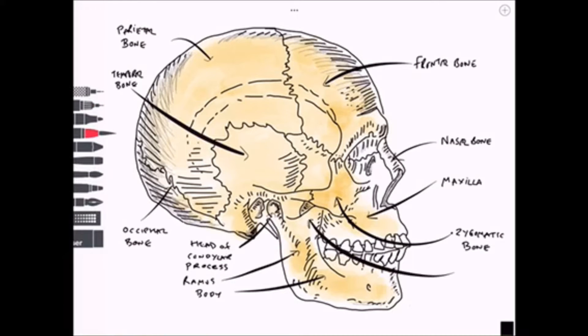Moving anteriorly, for attachment of muscles we have the coronoid process. We have a hole in the anterior part of the mandible known as the mental foramen for branches of trigeminal nerve to protrude through.